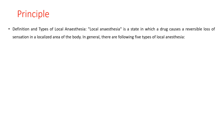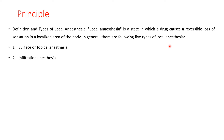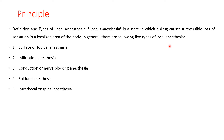Local anesthesia is a state in which a drug causes a reversible loss of sensation in a localized area of the body. There are five types of local anesthesia: surface or topical anesthesia, infiltration anesthesia, conduction or nerve block anesthesia, epidural anesthesia, and intrathecal or spinal anesthesia.